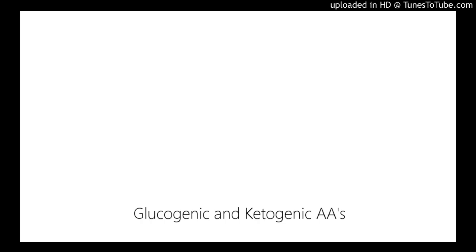Glucogenic amino acids make pyruvate or TCA cycle parts, unlike the ketogenic ones. Here they are: glycine, which with tryptophan makes serine, cysteine, and alanine, then pyruvate.